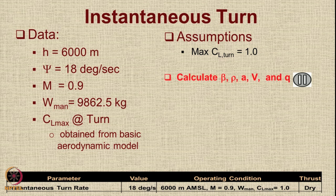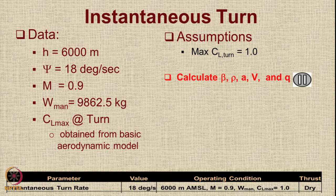Now we need to calculate beta, rho, A, V, and Q. To calculate beta, we need to know the aircraft weight at this condition — we can assume it to be 0.8. The density will come from the ISA table at 6000 meters. Once you know the altitude, you know the ambient temperature and hence the sonic speed. Since Mach number is known, you can calculate V, and once density and V are known, you can calculate dynamic pressure Q = ½ρV². Take a pause and calculate these values.